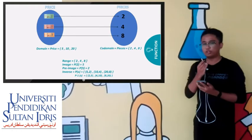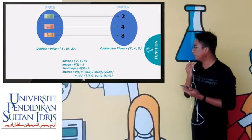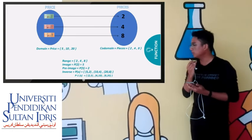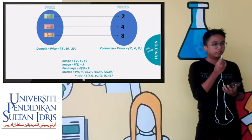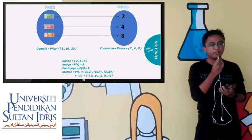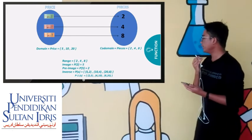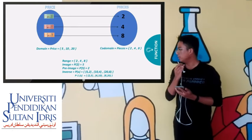The first one is domain. Domain is the first ordered pair in the diagram. In the diagram, it is the price: five ringgit, ten ringgit, and twenty ringgit. The codomain is the second ordered pair.